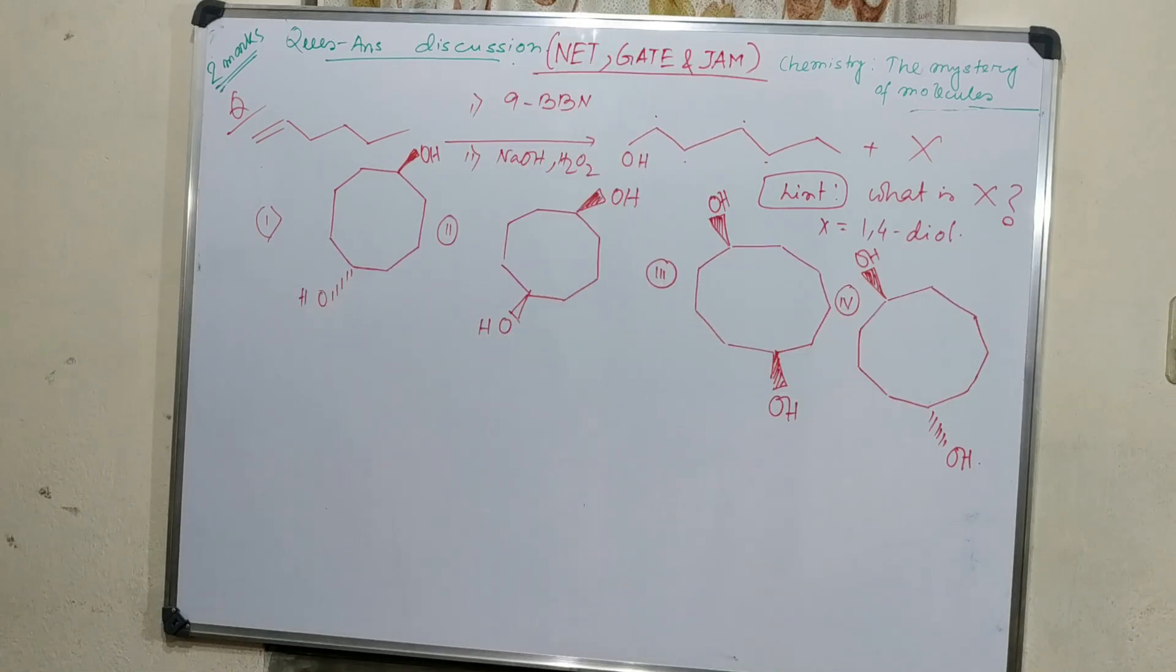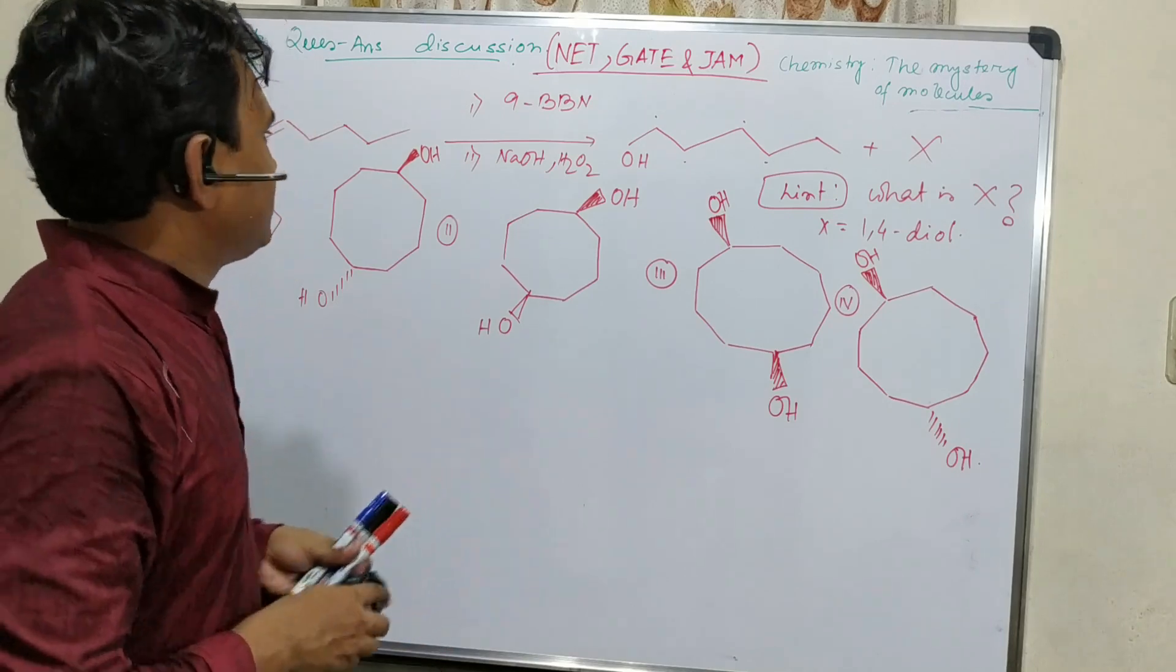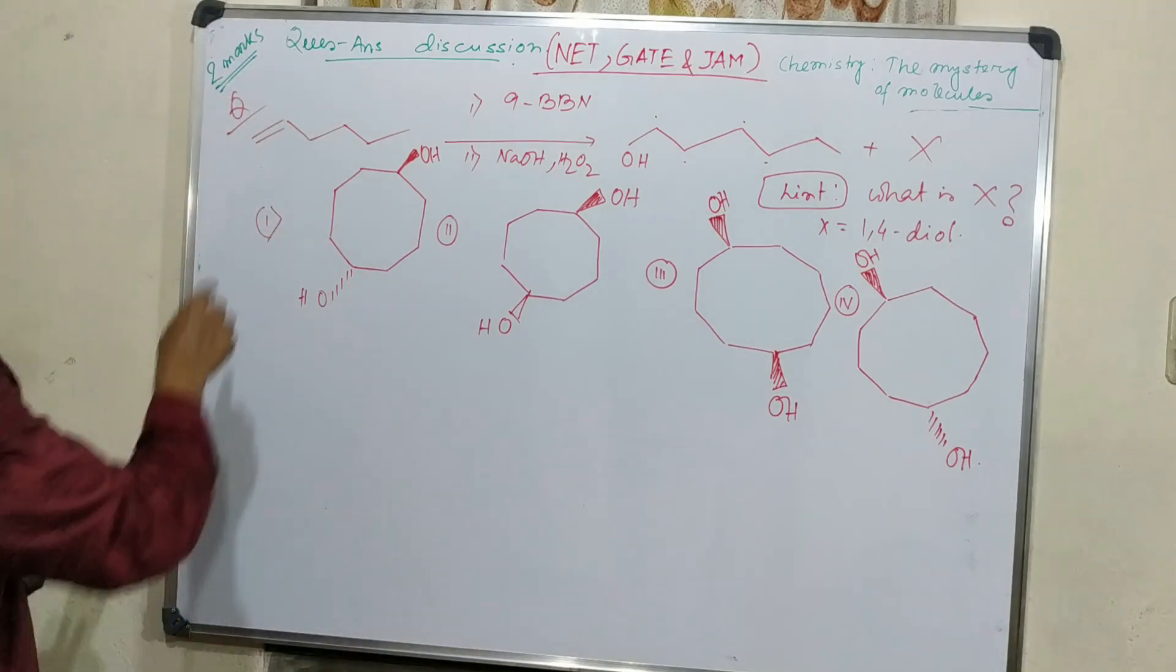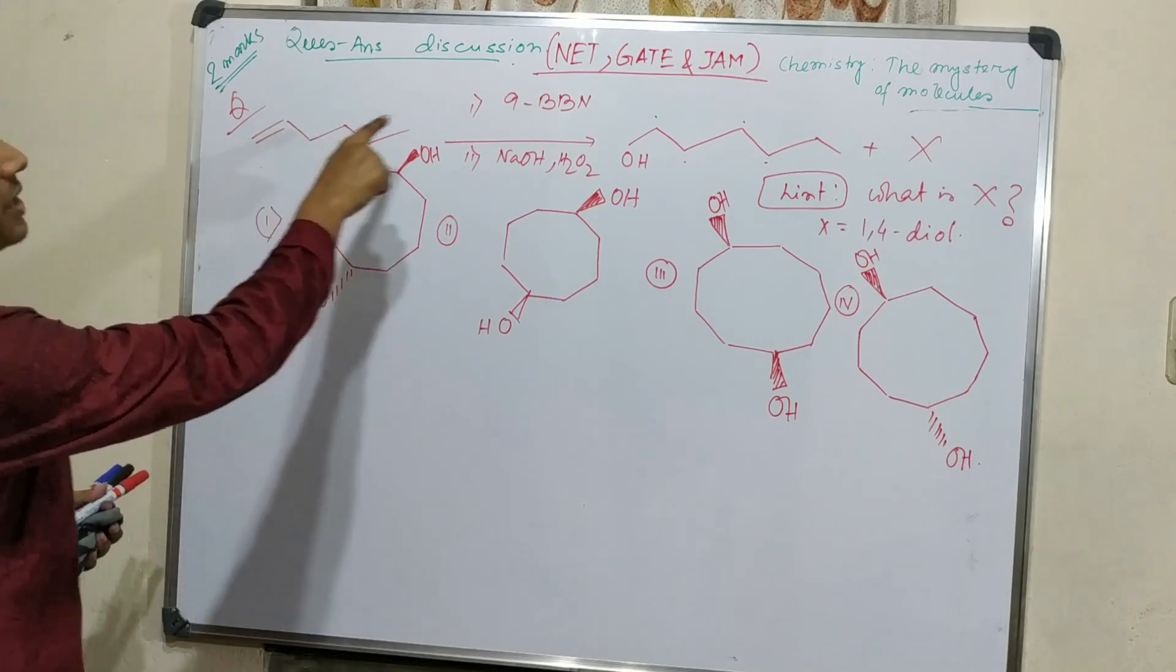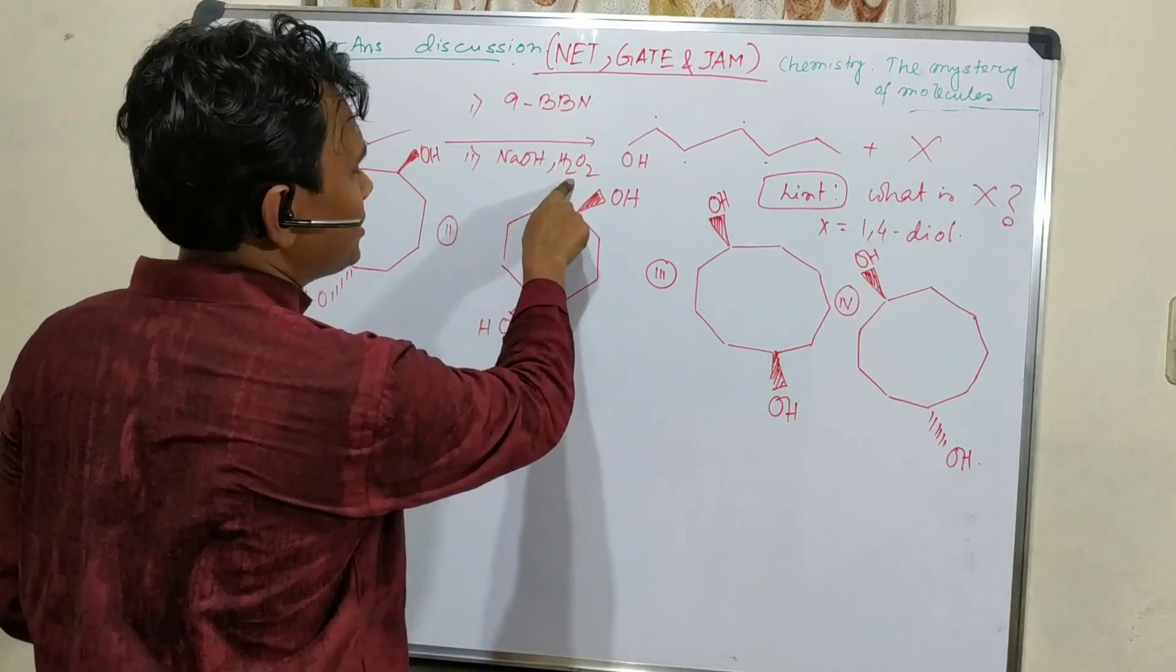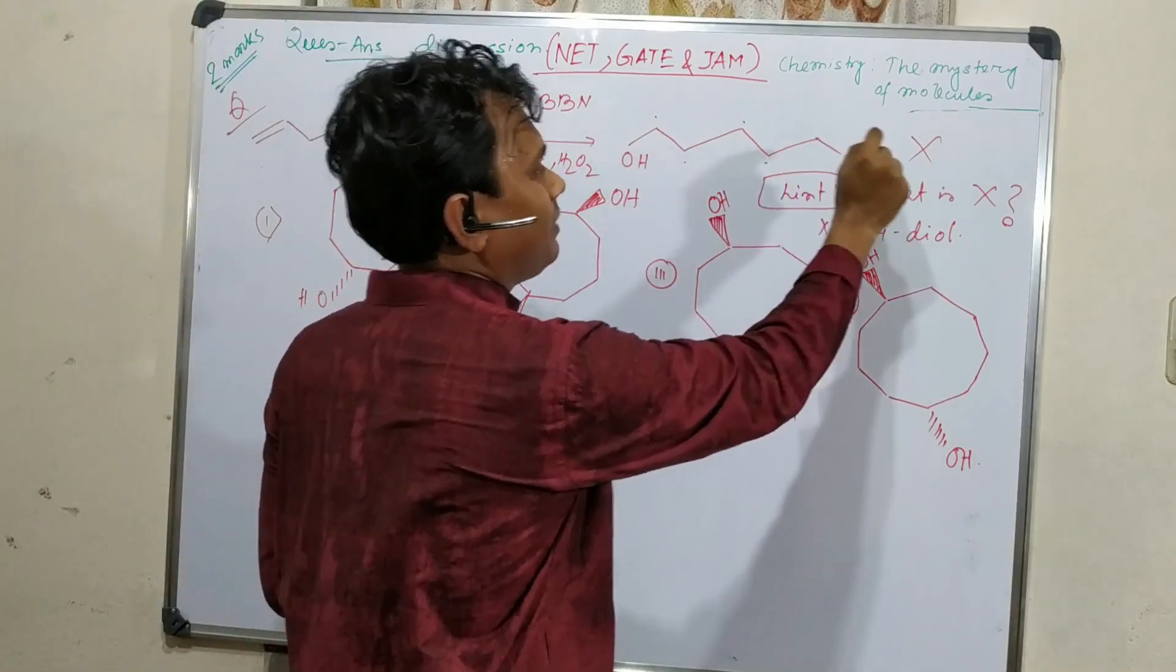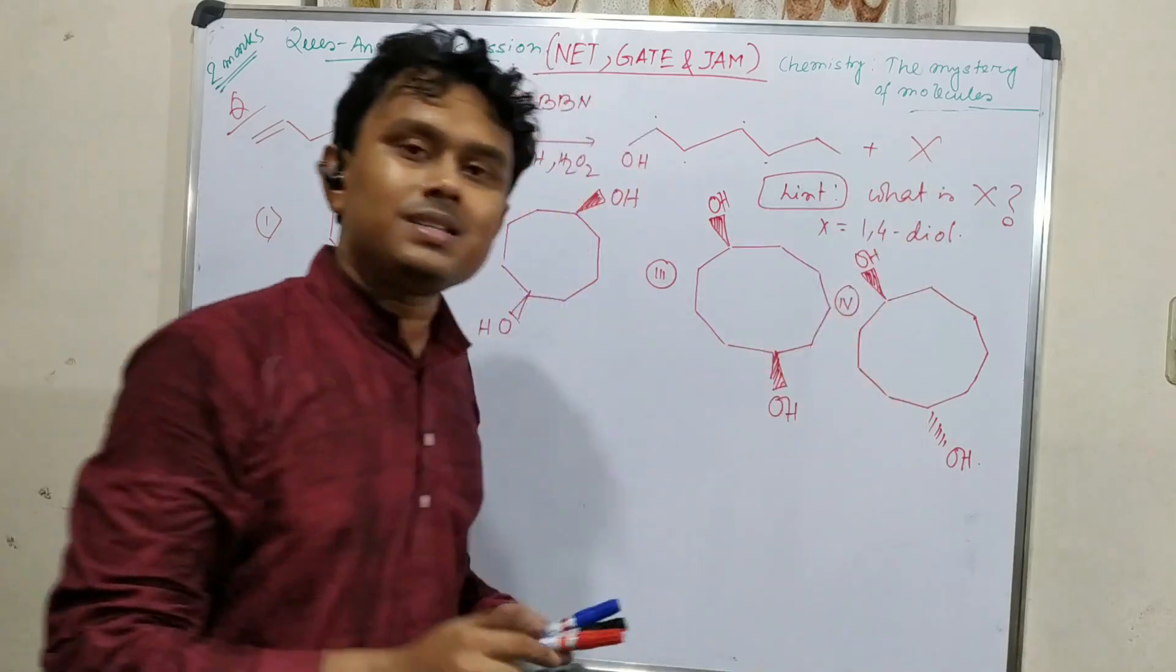Welcome friends, I am Ammar. Today we will discuss a question about 1-hexene reacting with 9-BBN first, and in the second step with sodium hydroxide and hydrogen peroxide to produce 1-hexanol and X.